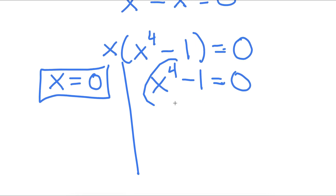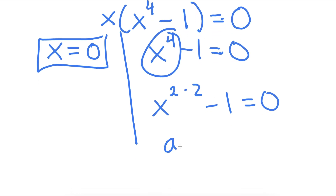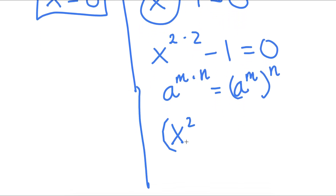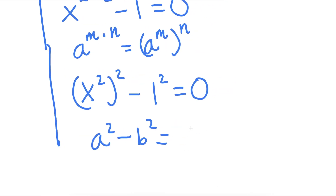To solve this, I'm going to first rewrite x to the power of 4 as x to the power of 2 times 2. If I have something in the form a to the power of m times n, this equals a to the power of m to the power of n. So x to the power of 2 times 2 can be rewritten as x squared to the power of 2, minus 1 squared, equals 0. Now if I have something in the form a squared minus b squared, this equals a plus b times a minus b.